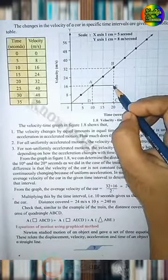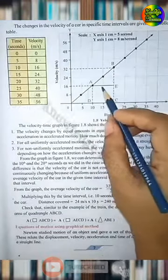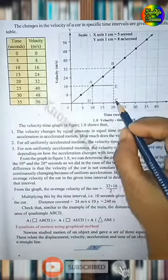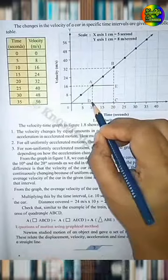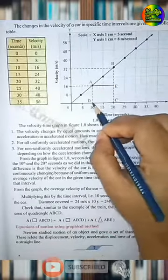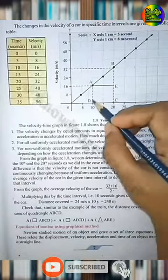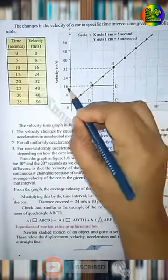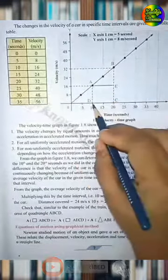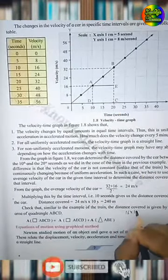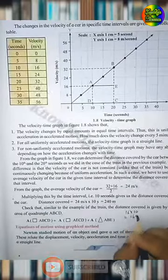Here, area of quadrangle AECD is equal to AD into DC. That is, AD is 16 into DC is 10. 16 into 10, that is 160.